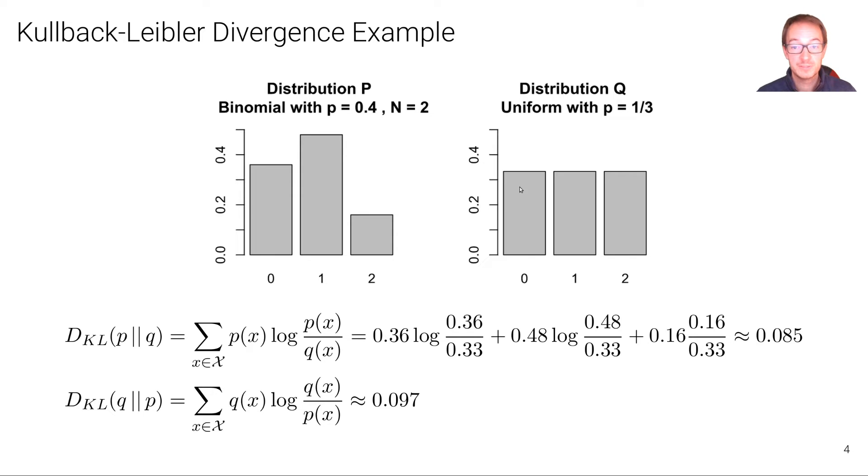And then we have 0.48 times logarithm 0.48 over 0.33. And we have 0.16, the logarithm is missing here, so times logarithm of 0.16 over 0.33. And that's roughly 0.085.